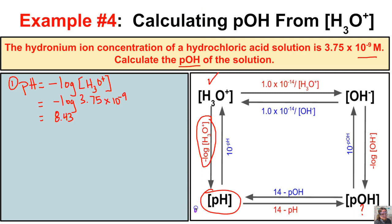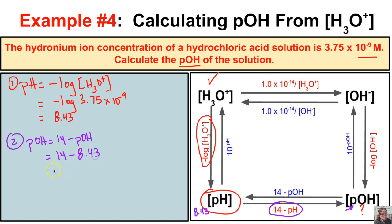The pH is 8.43, but that is not our final answer. The question asks for the pOH, so in step two we take 14 minus the pH: 14 − 8.43 = 5.47. So a hydrochloric acid solution with a hydronium ion concentration of 3.75×10⁻⁹ moles per liter has a pOH of 5.47.